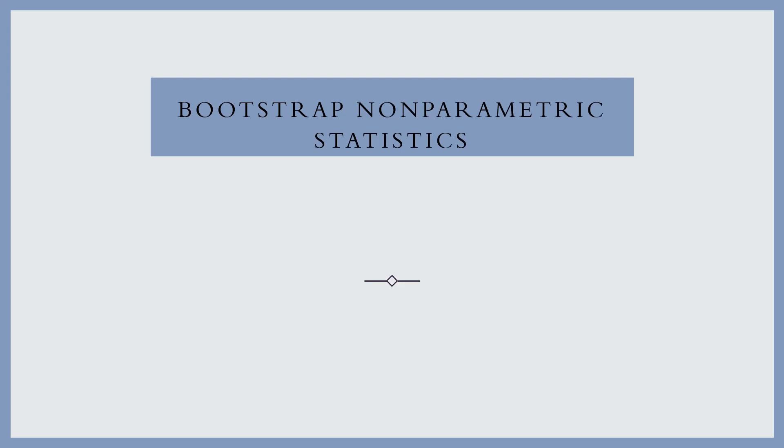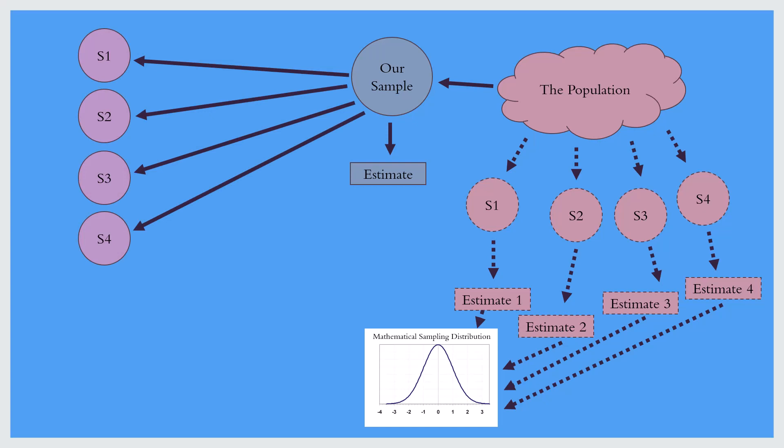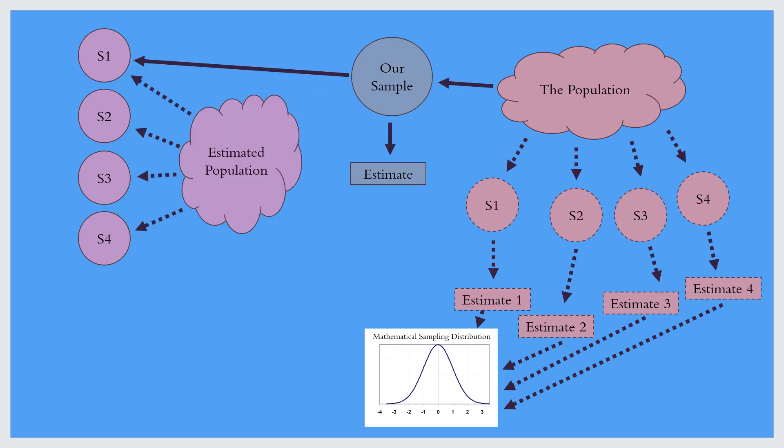By contrast, we could do bootstrap non-parametric statistics. Once again, we have a sample and we can make estimates from our sample, but those estimates are simply to describe our sample — we don't use them to create the population. Instead, we create multiple samples from our original sample by sampling from our sample. We sample from our sample one time for sample one, do it again for sample two, and so on many, many times. Again, we're using the Monte Carlo method to create these samples, but we're bypassing the estimated population — it's still there in the background, but we think of it as drawing samples without actually using a parametric population form.